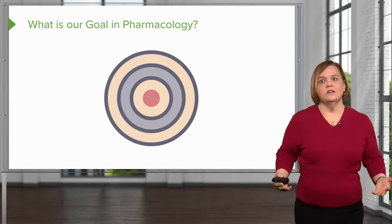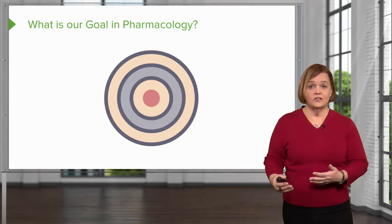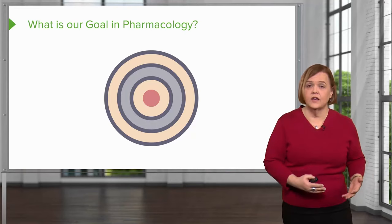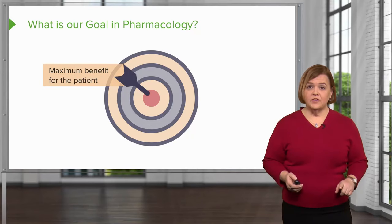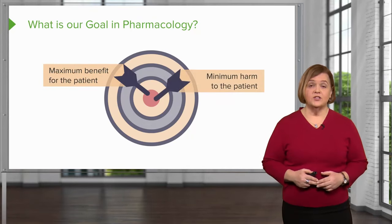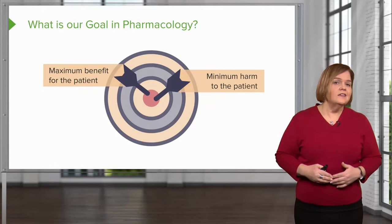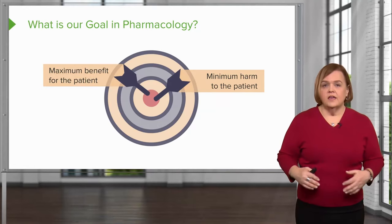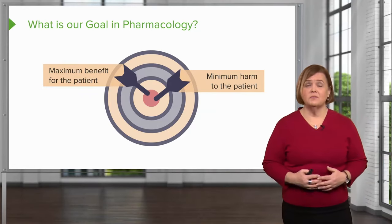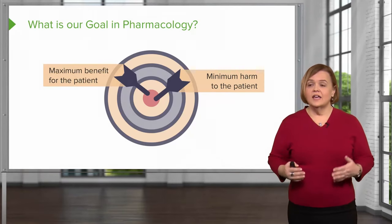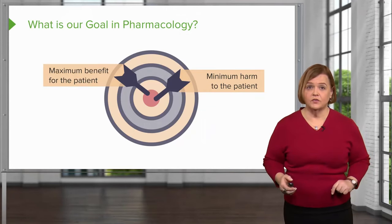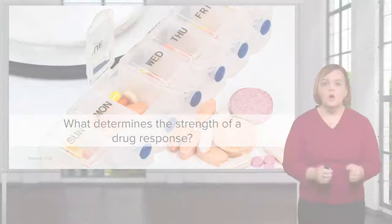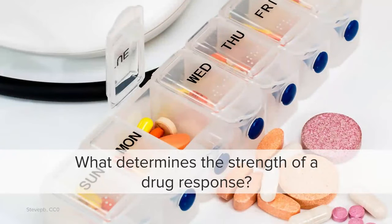So overall, what is our goal with pharmacology? We've already talked about all the things that we wish a drug could do, and that there is no true ideal drug. So what is our target? We're looking for maximum benefit for the patient with minimum harm to the patient. And really, that's the exciting part about pharmacology — it's not just memorizing drugs and names and side effects and adverse effects. What we're looking for is: how do I help my patient get the most from this drug with the minimum harm? And that's where nurses play a pivotal role. So here's another question for you: what determines the strength of a drug response?